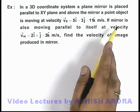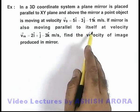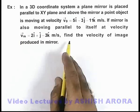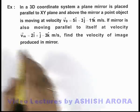It is saying that a mirror is also moving parallel to itself at velocity vector vₘ. We are required to find the velocity of image produced in the mirror.